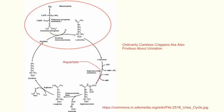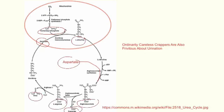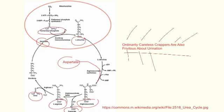So if we start with ornithine, we get ordinarily careless crappers are also frivolous about urination. And just as I've written, ordinarily careless crappers are also frivolous about urination. So we have ornithine, carbamoyl phosphate, citrulline, aspartate, arginosuccinate, fumarate, arginine, urea.